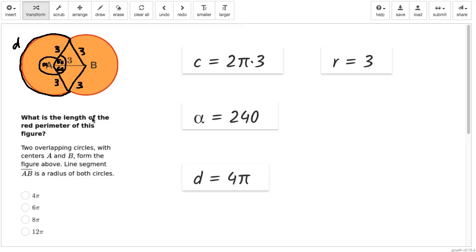This D is 4 times pi. And since we have 2 of these that make up the red perimeter of the whole figure, we know that our result should be 8 pi.